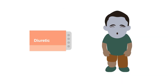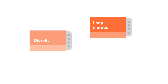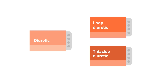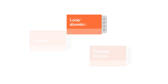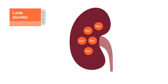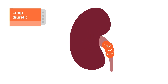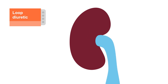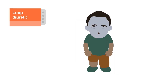Diuretics are used to relieve symptoms of volume overload. There are two types of diuretics — loop diuretics and thiazide diuretics — that are commonly used. Loop diuretics should be started first. They cause the kidneys to excrete more sodium and water into the urine, then fluid that has accumulated in the tissues is drawn back into the bloodstream, so congestive symptoms such as edema and dyspnea will improve.